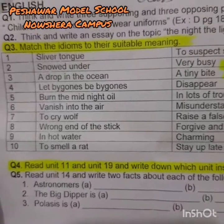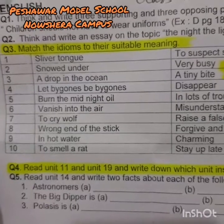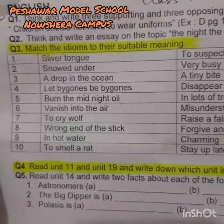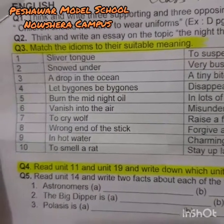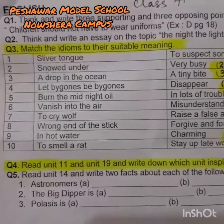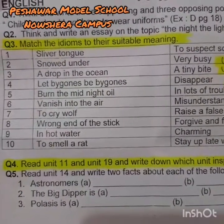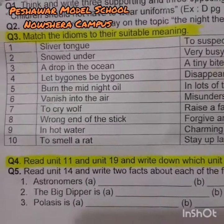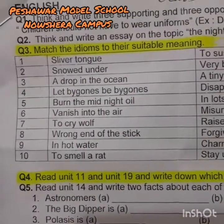So we are going to match these idioms with their meanings. We have 10 idioms here. First is 'silver tongue' — note the spelling, it's silver, not sliver. Then: 'snowed under,' 'a drop in the ocean,' 'let bygones be bygones,' 'burn the midnight oil,' 'vanish into the air,' 'to cry wolf,' 'wrong end of the stick,' 'in hot water,' and 'to smell a rat.'